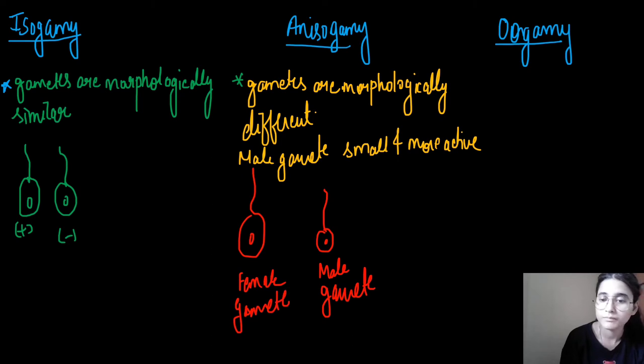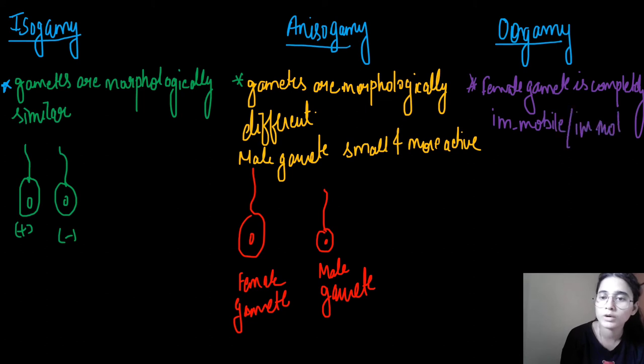Now, let's talk about oogamy. Female gametes is completely immobile. The female gamete is immobile or immotile. But what is the male gamete? The male gamete is motile.